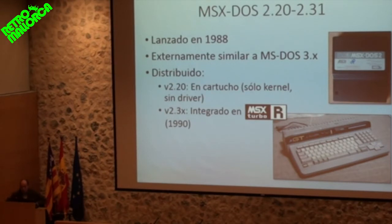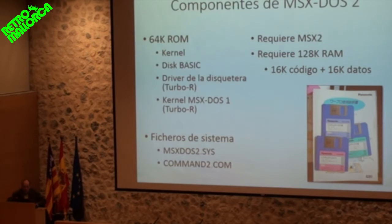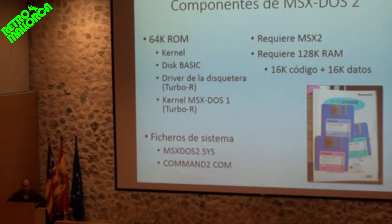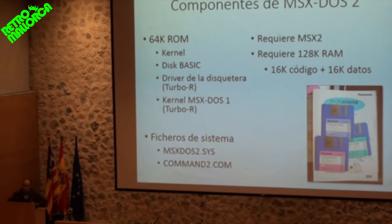By the way, versions 2.0 and 2.1 were experimental and I'm not even sure if they went on sale. MSX-DOS 2.2 had a kernel that occupied a respectable 64KB of ROM. The Turbo R also included the disk drive driver and a copy of the old version 2 kernel. Why? Because some software, due to memory management issues, didn't work in MSX-DOS 2.2 mode, so it was necessary to boot in 2.1 mode. The Turbo R supported this by keeping a copy of the old OS kernel.